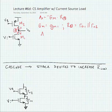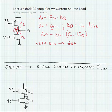This gives our voltage gain as minus GM1 times RO1 in parallel with RO2. All right, this is very big.